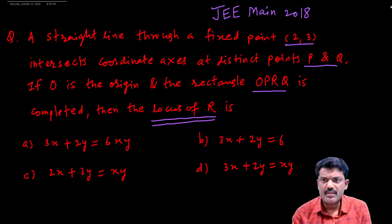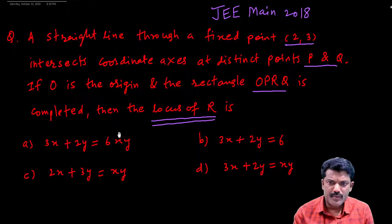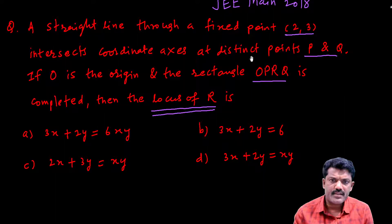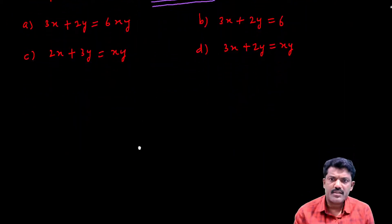So question ko achi tarah se samaj lije ki ek line (2,3) point se pass hoti hai aur coordinate axes yani x-axis aur y-axis ko P aur Q point mein intersect karti hai.